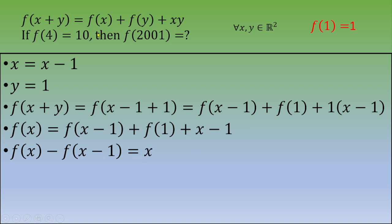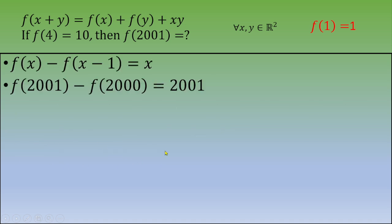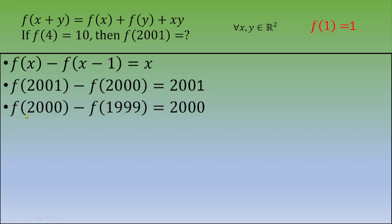We want to find f(2001), so we apply this recurrence for successive values of x. We write: f(2001) − f(2000) = 2001, then f(2000) − f(1999) = 2000, and we continue like this all the way down.